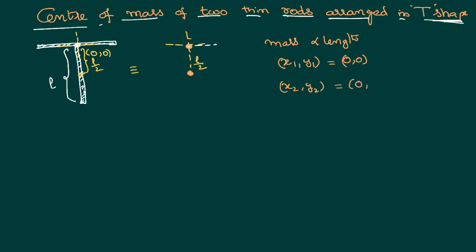It is on the y-axis, therefore in the place of y2 I can write L by 2. Now there is no xcm for this system because both the particles are on the y-axis, therefore xcm equals 0. It will have only ycm.